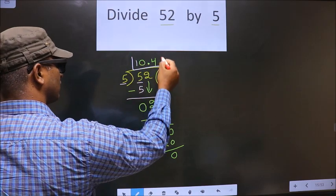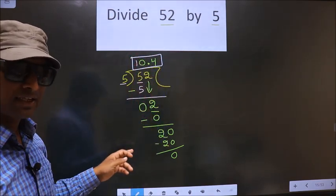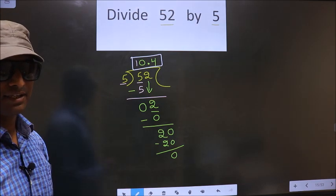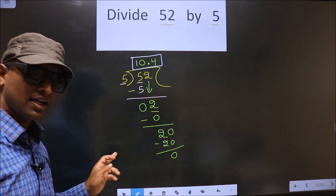So this is our quotient. Did you understand the mistake? You should not repeat it. Am I clear?